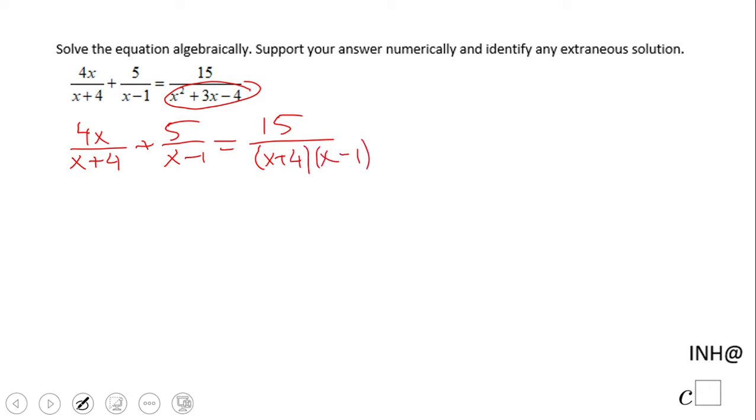Now, in order to solve this one, the best way to do it is to use the least common multiple of these three denominators, which is in fact x plus 4 times x minus 1. This is the least common multiple.